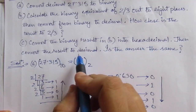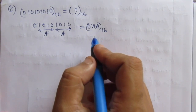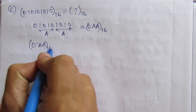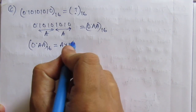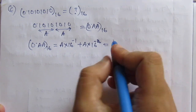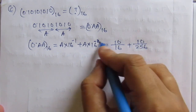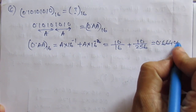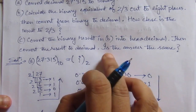Then the question asks us to convert the hexadecimal result back to decimal. 0.AA base 16 equals A × 16⁻¹ plus A × 16⁻² = 10/16 + 10/256. Since 16² = 256, we get 0.6640625. So the decimal equivalent is 0.6640625.